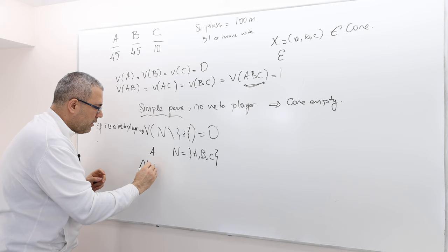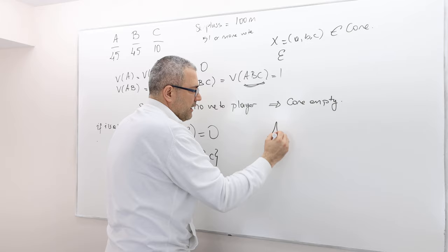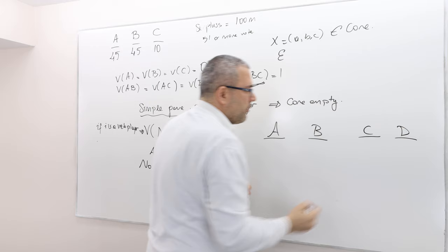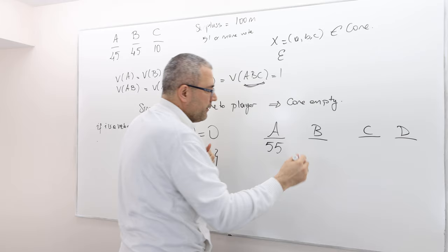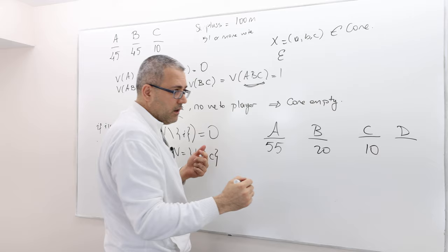Consider this example, political party A, B, C, maybe I need D, okay? So think of this. Well, I think that's obvious, but who cares? Let's go with the obvious one. So 55, 20, 10, 15. Okay.